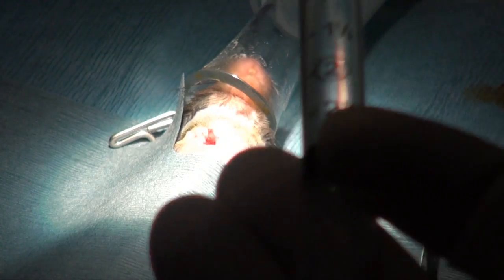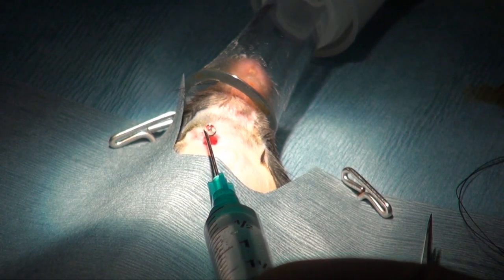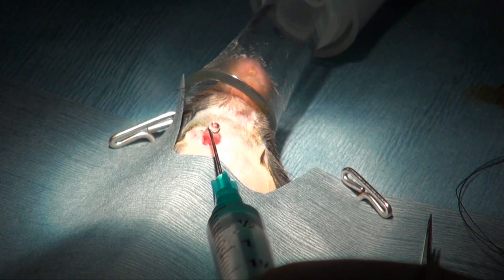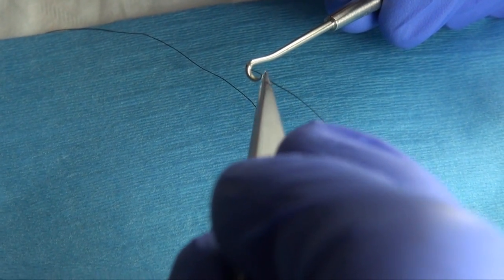Once the vein is fully isolated, break the surface tension by adding saline. Then use the probe to insert a 6-0 suture beneath the vein.